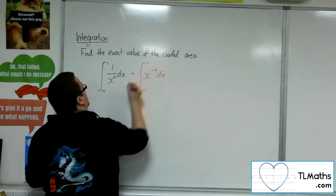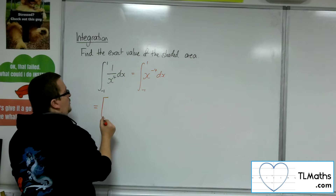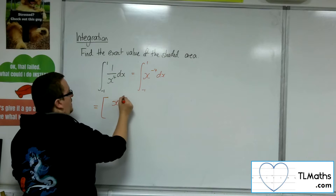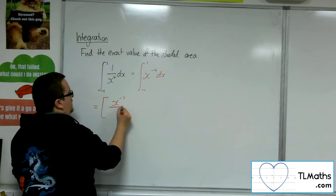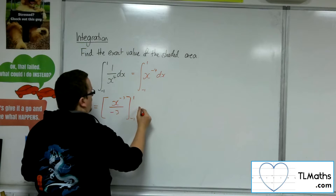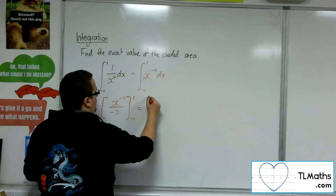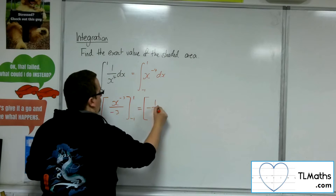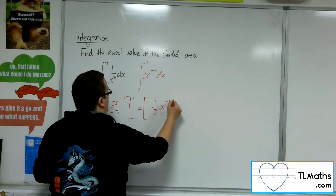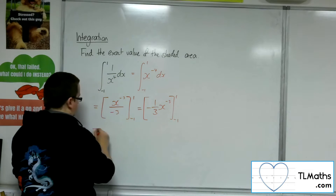I'm evaluating between minus 1 and 1, so I can add 1 to the power — so x to the minus 3 — and divide by the new power. Tidying that up, we can write that as minus 1 third of x to the minus 3, evaluated between minus 1 and 1.